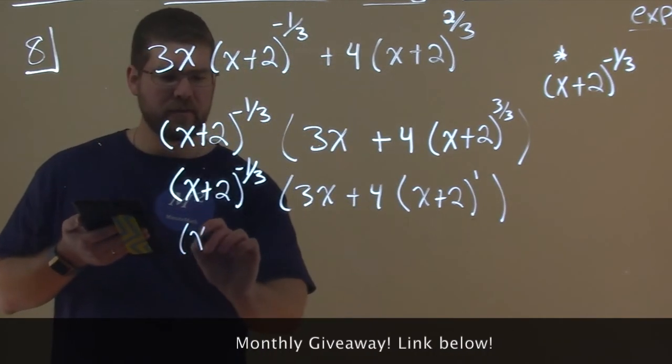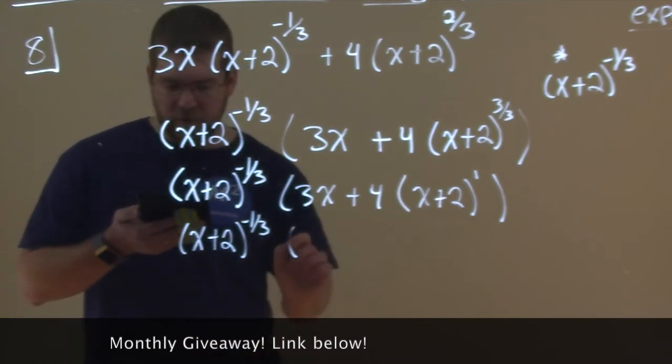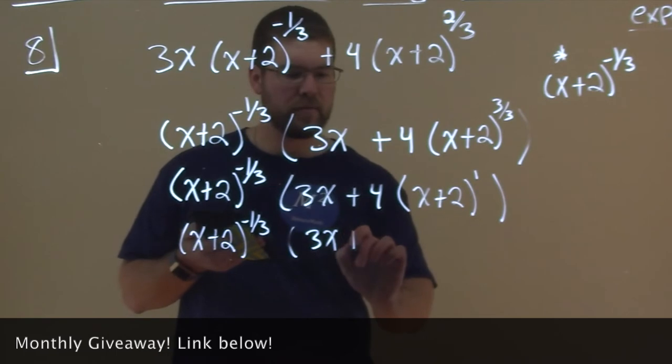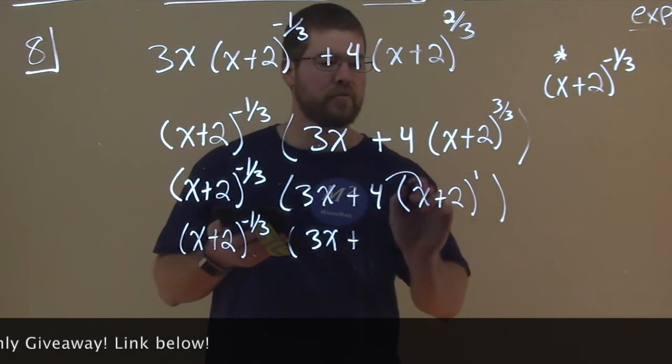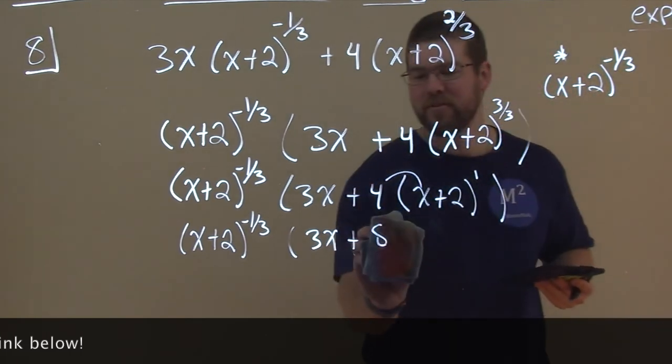So again, (x+2) to the negative 1/3 power. But the inside, only 3x plus 4 times x we distribute is, oh, I almost said 8x, that was 2x for a second, but it's just 4x.